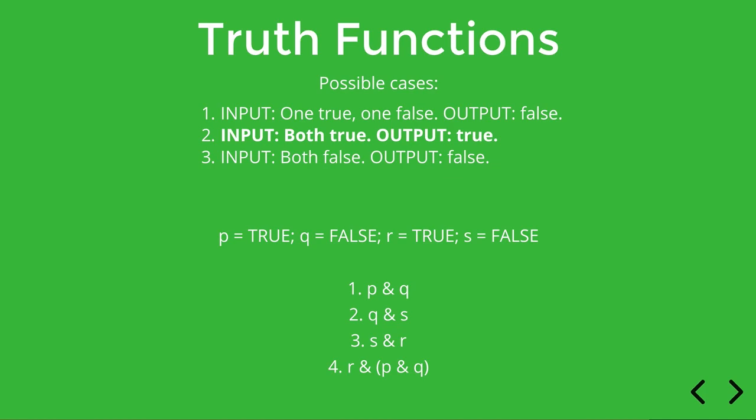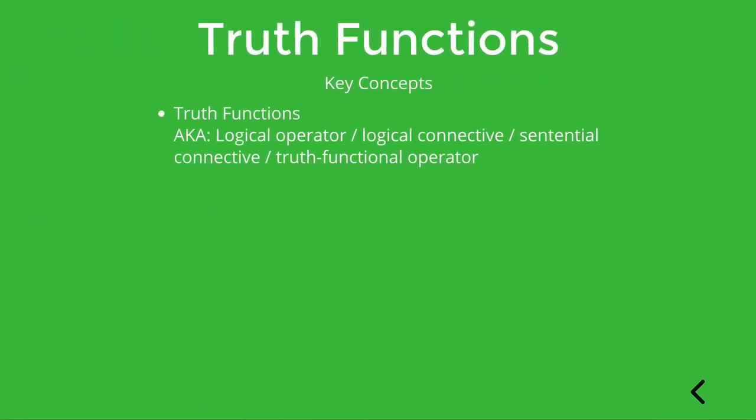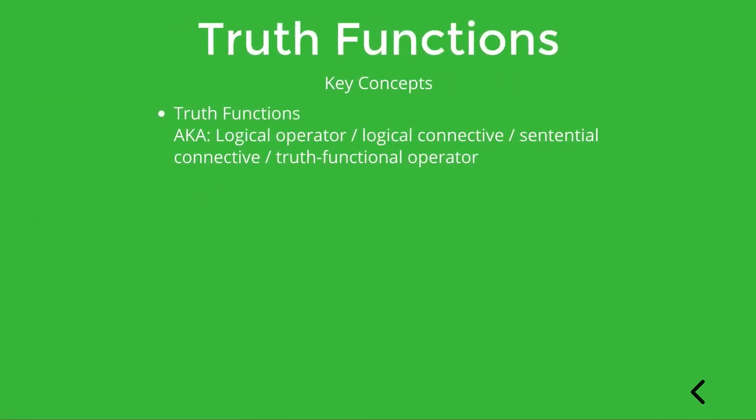All right, so that's why AND and other such terms are called truth functions. They take as input only the truth values of the component sentences and they use that information to produce a truth value as output. Okay, so in the next video we'll explore truth tables, which provide a very clear way to encapsulate the rules about logical operators that we just discussed.